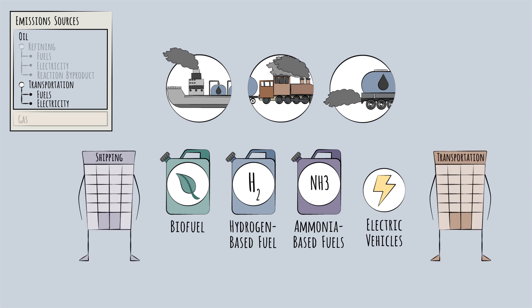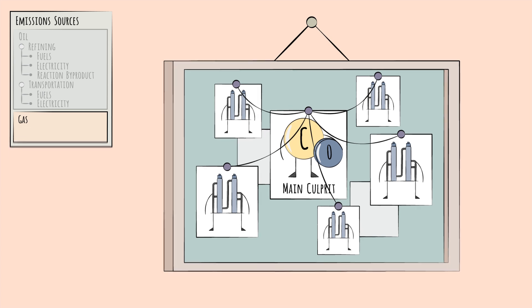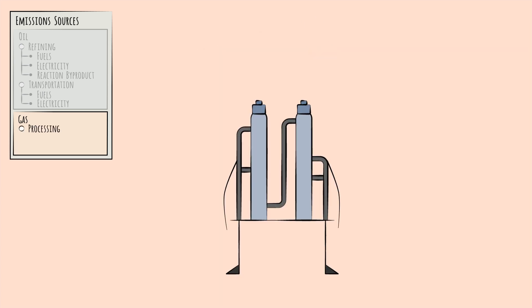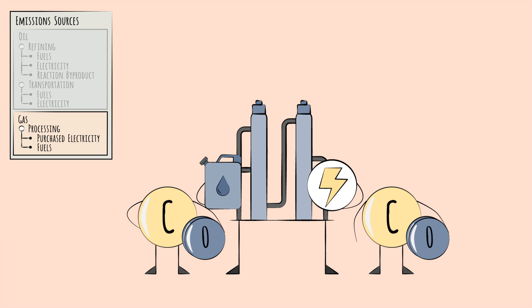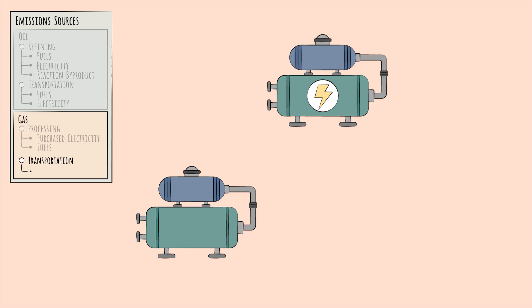Let's turn to natural gas. The same emissions culprits apply in processing—emissions come from both electricity use and the burning of fuels, though gas processing is less energy intensive than oil refining on both fronts. Transportation matters too. Gas pipelines have powerful compressors. Although some compressors can be electric, most run on fuel, usually natural gas or diesel. LNG ships face the same carbon reduction challenges as oil tankers.